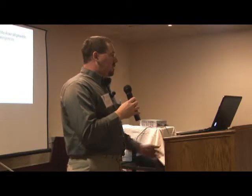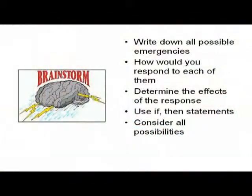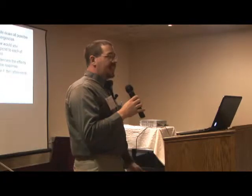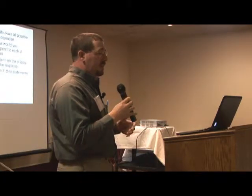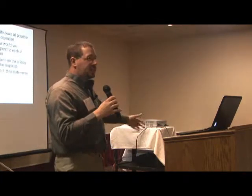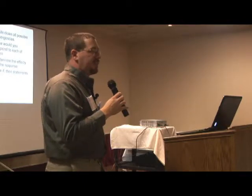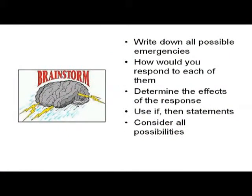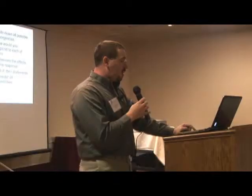The first step is brainstorming. Get a piece of paper, get as many people involved as you can, write down all the possibilities that you think could go wrong and how you're going to respond to each of them. Use a lot of if-and-then statements because when you make a decision and move on to the next, each one is going to affect the other. Just flush it out and write it all down. Consider all the possibilities no matter how small you might think they are.